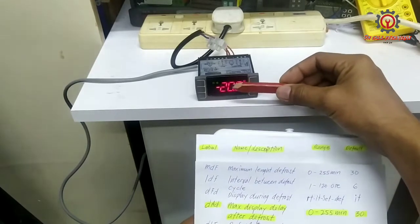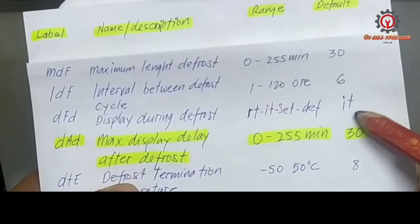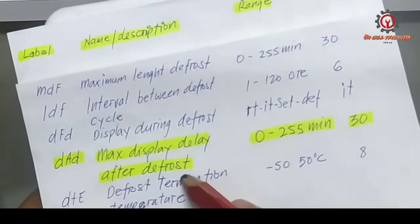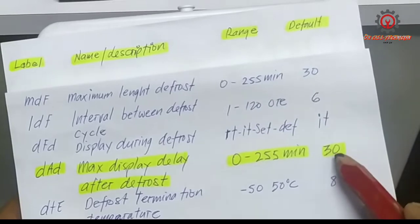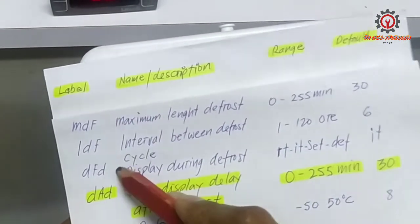IT is the display temperature at the start of defrost. The problem is the DAD - the maximum display delay after defrosting. I'm going to teach you the relevance of this DAD to IDF, MDF, DFD, and DTE.